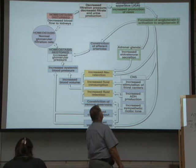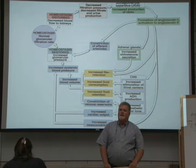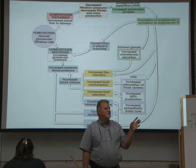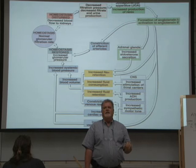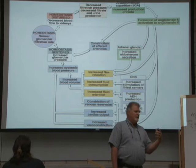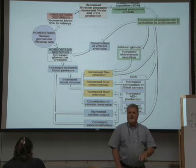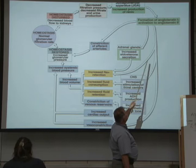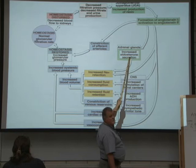The juxtaglomerular cells produce renin. Renin converts angiotensinogen — a protein produced by the liver — to angiotensin 1. Angiotensin 1 goes to the lungs, where an enzyme in the capillary beds called ACE converts angiotensin 1 to angiotensin 2. These flow charts look simple, but there's stuff behind the scenes you've got to think about. Angiotensin 2 levels increase the adrenal glands' production of aldosterone.